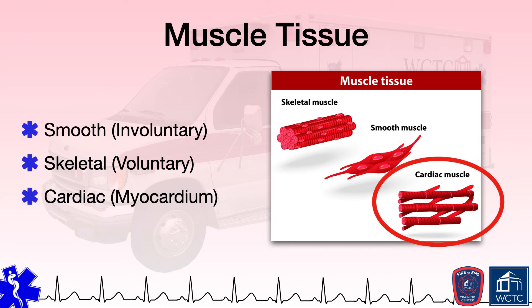The last type of muscle tissue is cardiac muscle tissue, also known as myocardium. This tissue is the contractile layer of the heart wall responsible for pumping blood throughout the body. Cardiac muscle tissue is similar to skeletal tissue in that it is striated. However, cardiac cells commonly have only one, maybe two nuclei. They are tightly connected through structures known as intercalated discs, and their contraction is not under conscious control. Rather, contraction is stimulated by the heart's electrical conduction system.